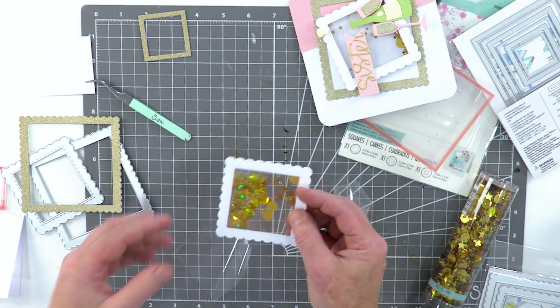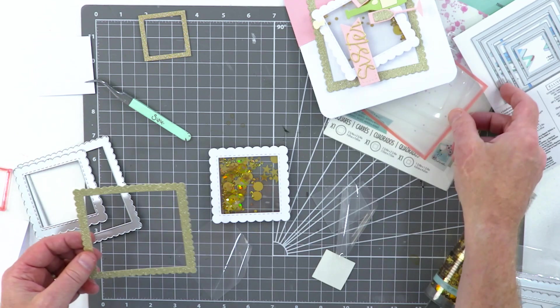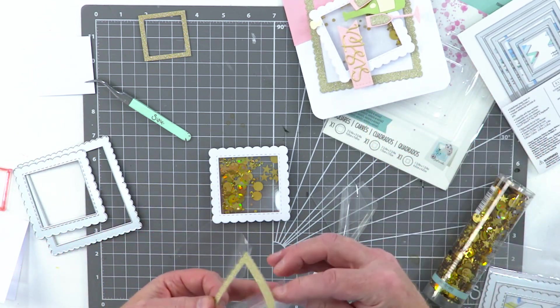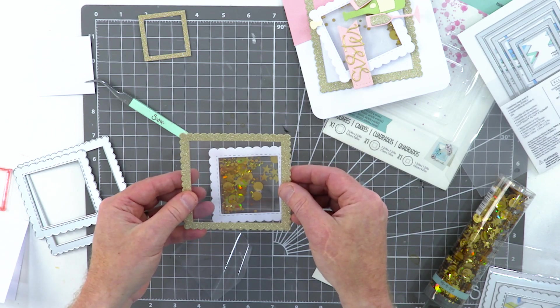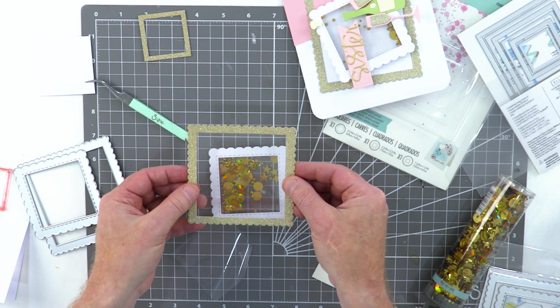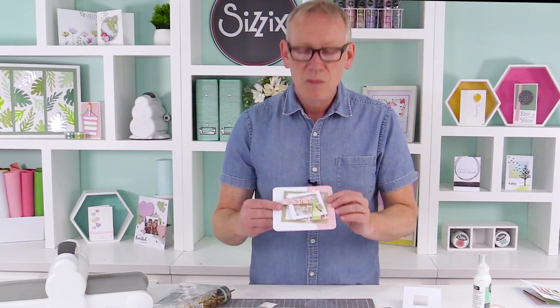So as I say, in this wonderful fabulous frames and borders set, two of the frames actually work with the shaker pane, so they're specifically sized. You can use them without, that's fine, it's entirely up to you, but they do work with them. So if you're looking to invest in a set like this, it's always good to know that they will work with other products from the Sizzix range. And just to show you, this is how it sits on the largest shaker pane. So very versatile, but most importantly, lots of fun.